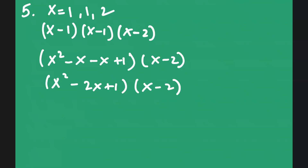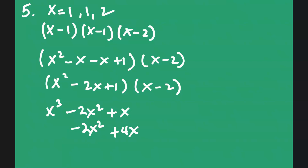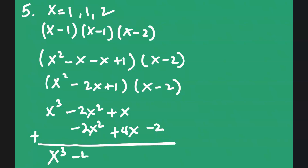Multiplying x times x squared gives x to the third power. x times negative 2x gives negative 2x squared. x times 1 gives x. Negative 2 times x squared gives negative 2x squared. Negative 2 times negative 2x gives positive 4x. Negative 2 times 1 gives negative 2. Writing it vertically and combining like terms: x to the third power minus 4x squared plus 5x minus 2.